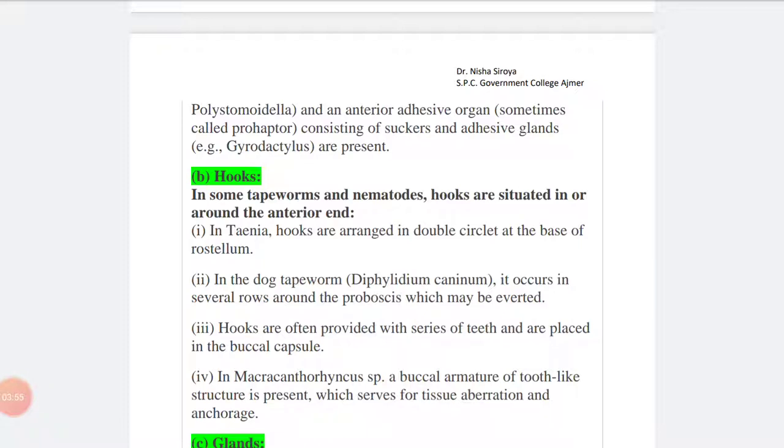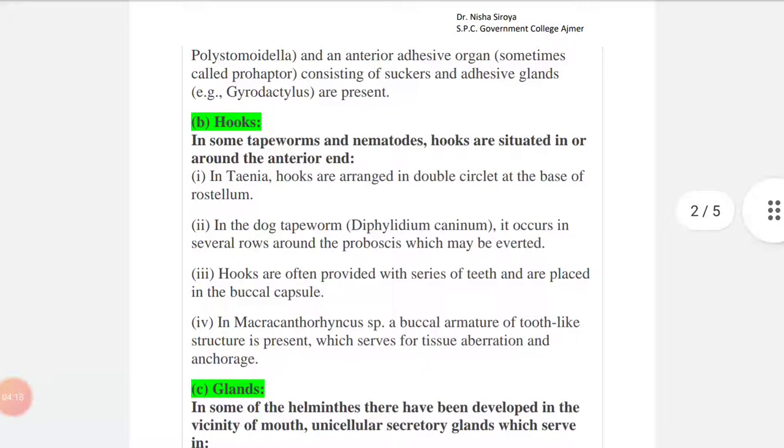The second category is hooks. In some tapeworms and nematodes, hooks are situated in or around the anterior end. In Taenia solium, hooks are arranged in double circlets at the base of the rostellum. In the dog tapeworm, it occurs in several rows around the proboscis which may be inverted.